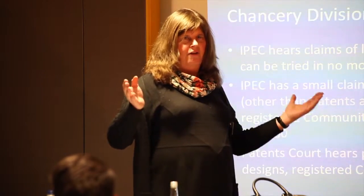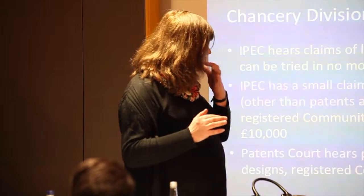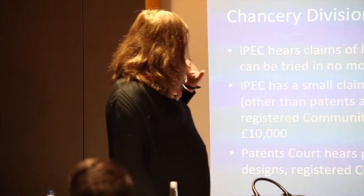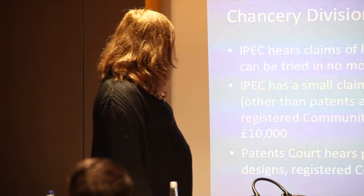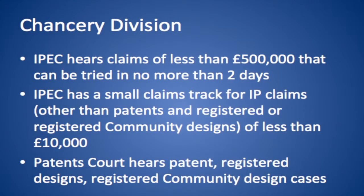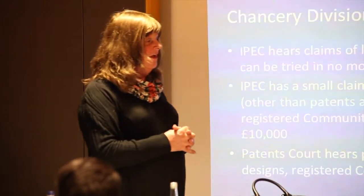We realised we were losing work to people like Holger in Germany and to the Dutch, and thought we'd better do something about improving the cost of litigation. So we introduced this jurisdiction for claims of less than £500,000 that can be tried in no more than two days. Unlike Germany and France, we have trials — one hearing where witnesses are cross-examined, counsel make arguments of law to a judge, with written and oral submissions, and everything's done in a big bang. Traditionally in intellectual property, that could take at least a week. One of the things about IPEC is that the trial is restricted to two days. IPEC has also introduced a small claims track for claims of less than £10,000 — excluding patents, registered designs, plant varieties and chip topographies — a very quick and informal process.